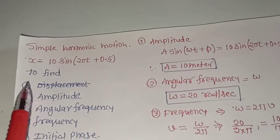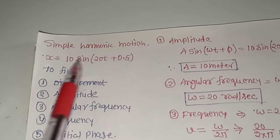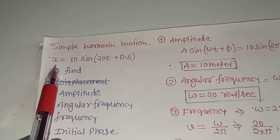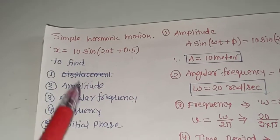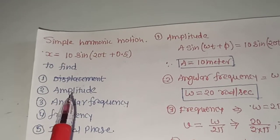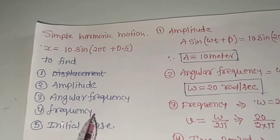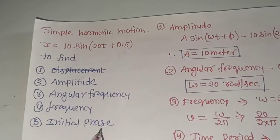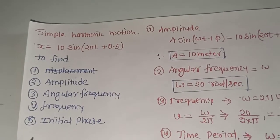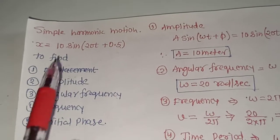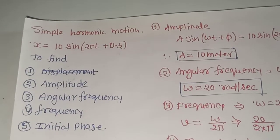This problem is related to simple harmonic motion and the equation of simple harmonic motion is given. We have to find the amplitude, angular frequency, frequency, initial phase, and the time period. So one by one we will find all the values.